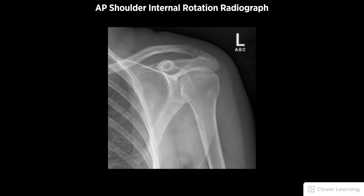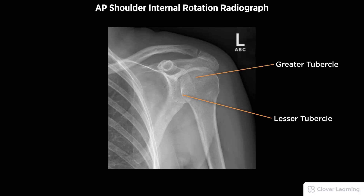A diagnostic AP shoulder internal rotation radiograph must be free of motion. Demonstrated anatomy to include the lesser tubercle in profile and pointing medially, and the greater tubercle superimposing the humeral head with proper visualization of clear bony detail.